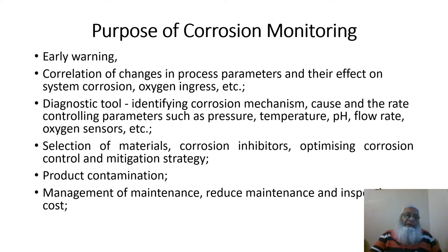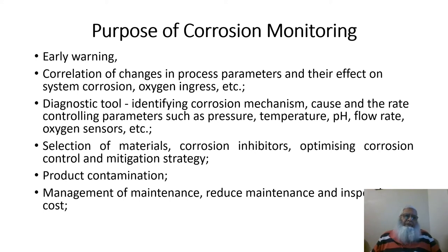The purpose of corrosion monitoring is to give early warning of what might have happened or is likely to happen to the surface of materials in the facility. It correlates changes in process parameters and their effect on system corrosion, oxygen ingress, and other parameters likely to affect the rate of corrosion. It is used as a diagnostic tool identifying corrosion mechanisms, causes, and rate-controlling parameters such as pressure, temperature, pH, flow rate, and oxygen sensors. It also helps in selecting materials, corrosion inhibitors, and optimizing corrosion control and mitigation strategy.